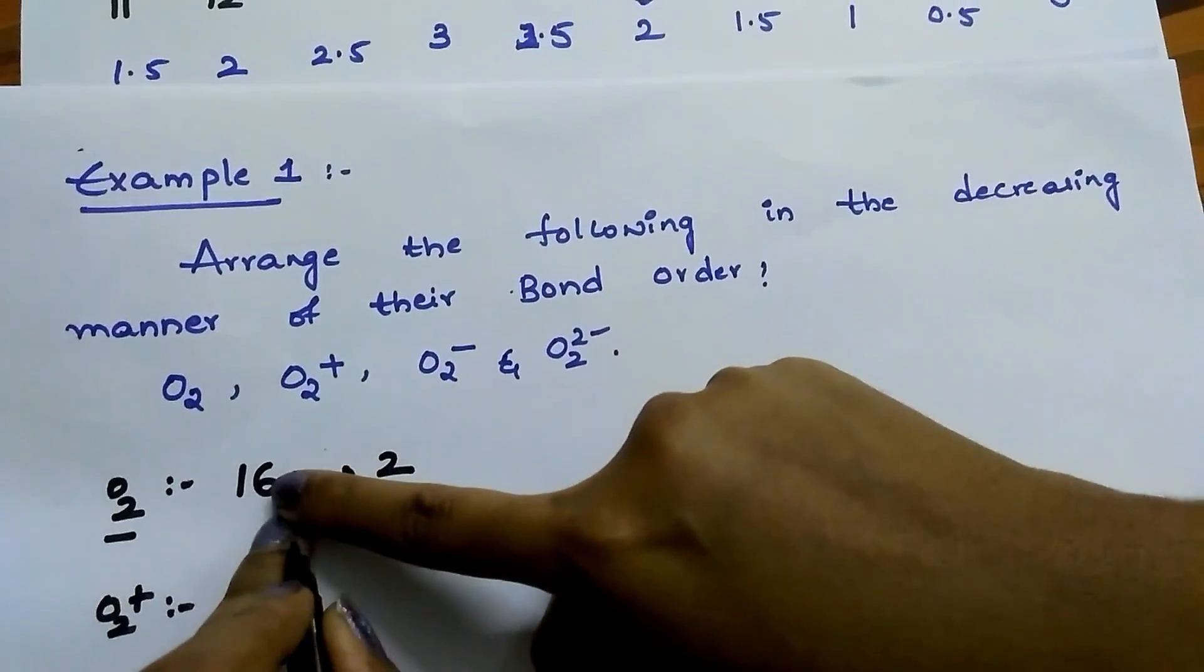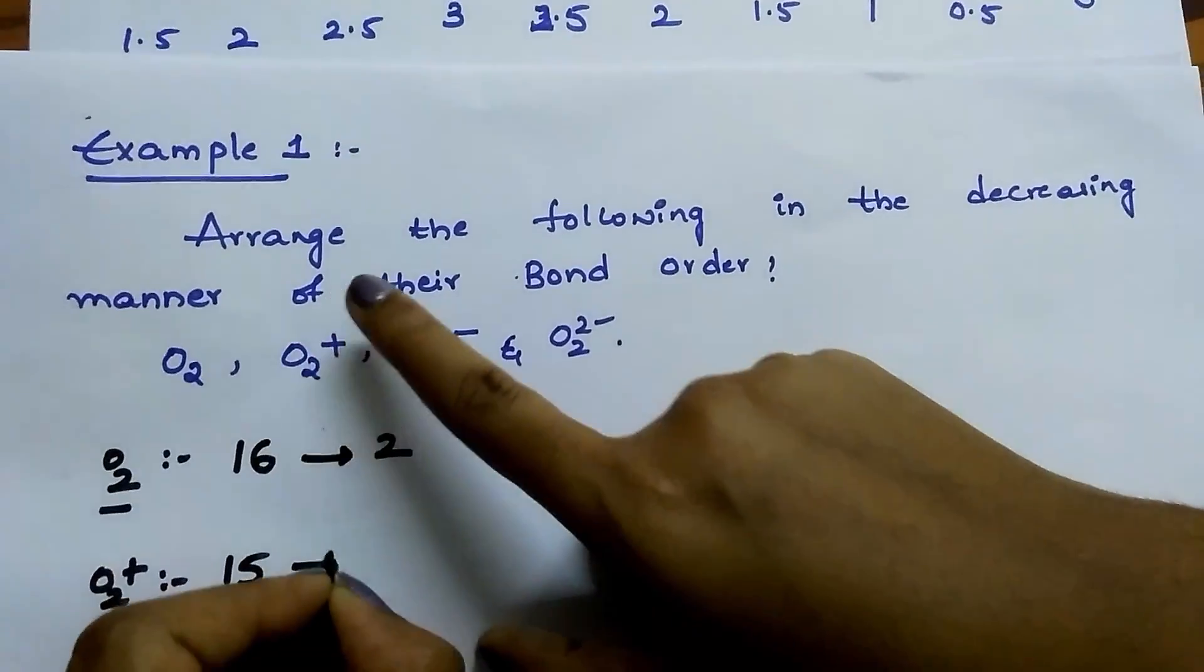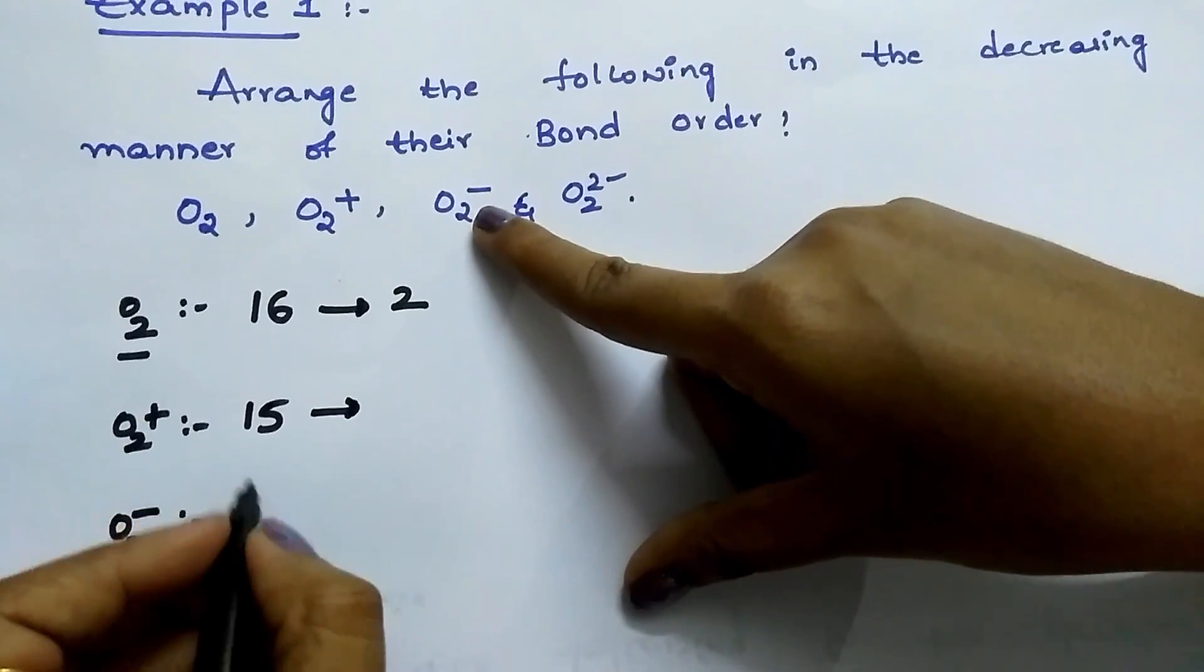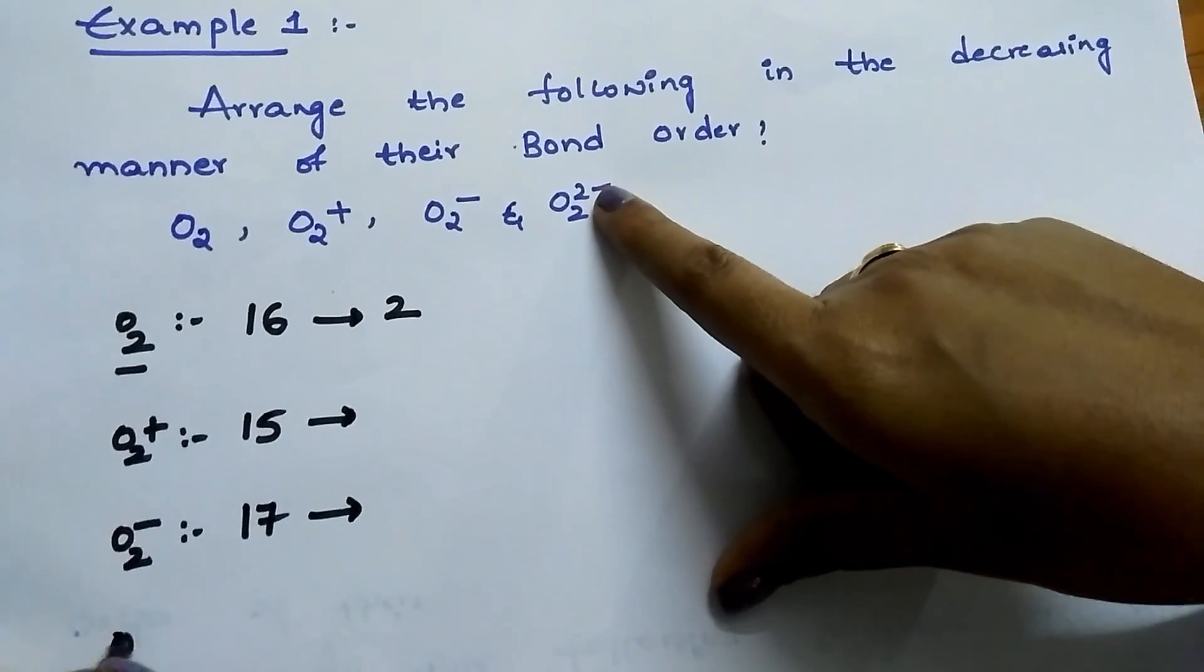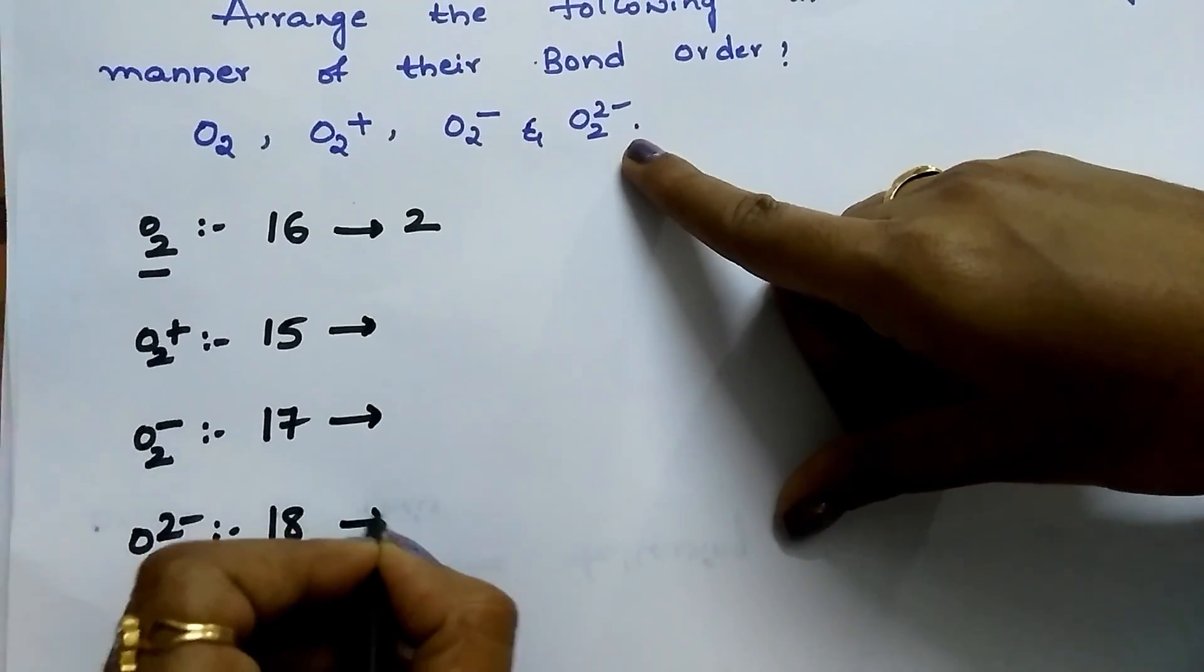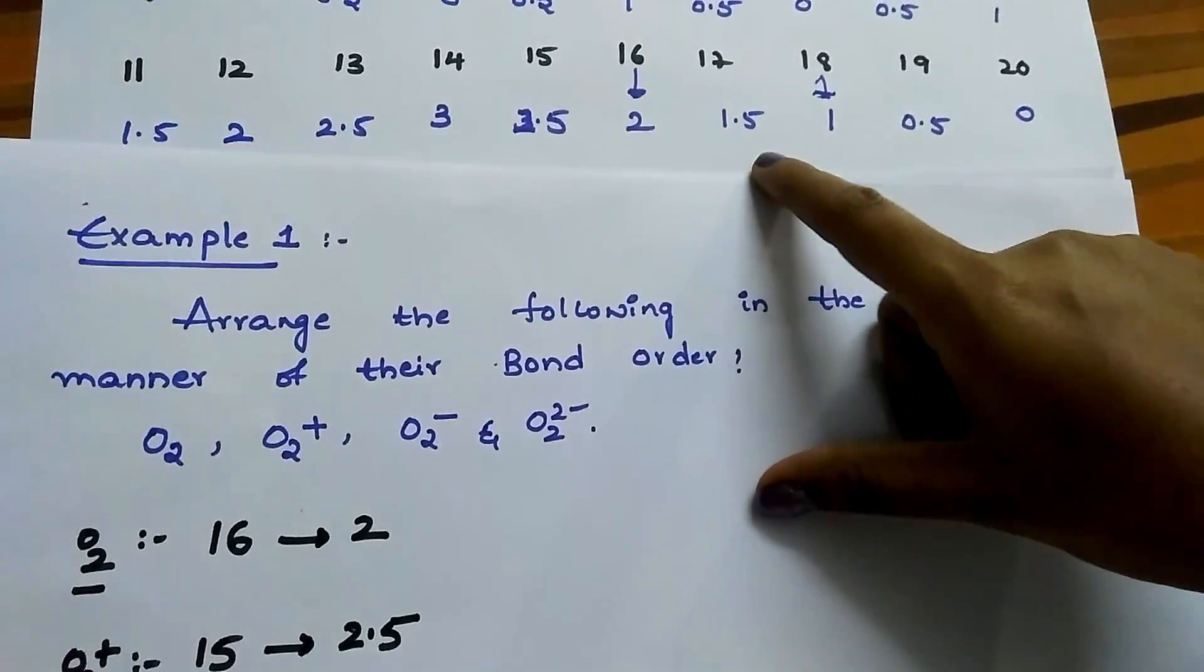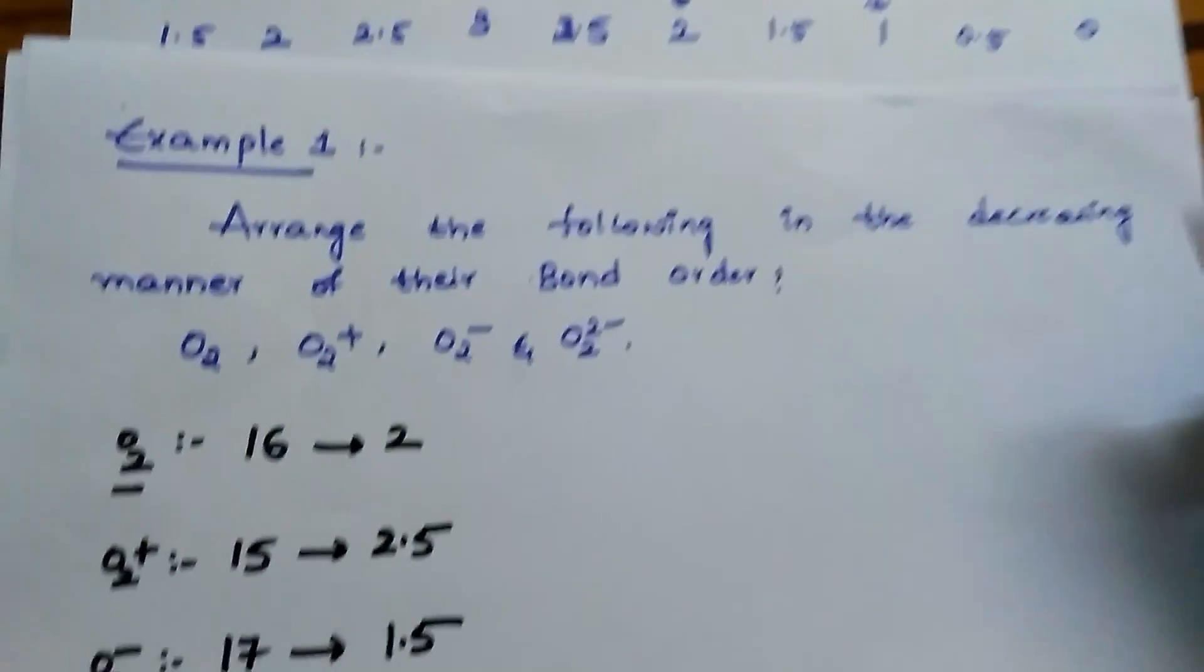O2+: 16 minus 1 because it lost 1 electron, so 15. O2-: 16 plus 1 because it gained 1 electron, so 17. O2(2-): 8 plus 8 is 16, plus 2 equals 18. Now see this chart: 16 electrons means bond order 2, 15 electrons means bond order 2.5, 17 electrons means bond order 1.5, and 18 electrons means bond order 1.